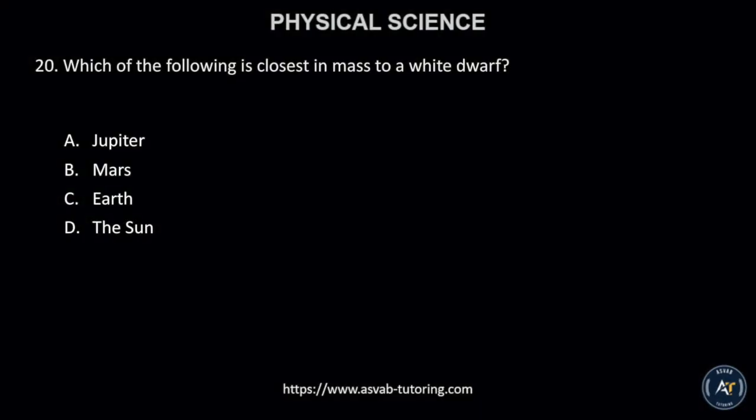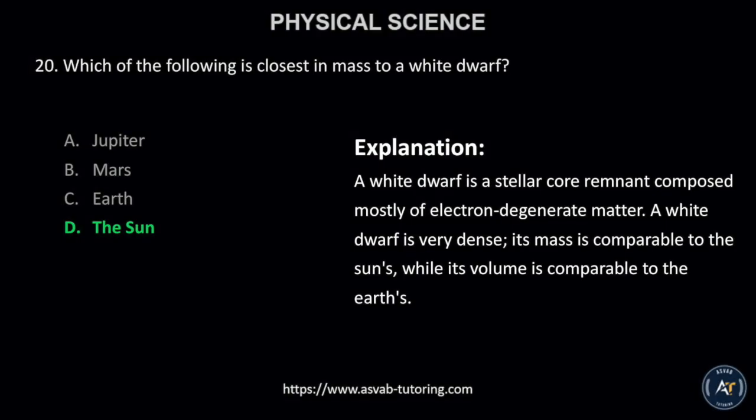Number 20. Which of the following is closest in mass to a white dwarf? A. Jupiter, B. Mars, C. Earth, or D. The Sun? The correct answer is D. The Sun.